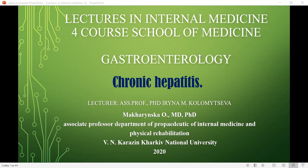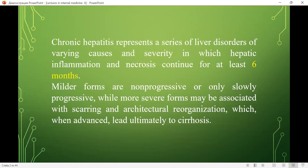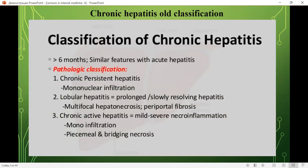What is chronic hepatitis? Chronic hepatitis represents a series of liver disorders of varying causes and severity in which hepatic inflammation and necrosis continue for at least six months. Milder forms are non-progressive or only slowly progressive, while more severe forms may be associated with scarring and architectural reorganization which, when advanced, lead ultimately to cirrhosis.